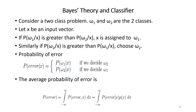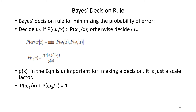The average probability of error can be obtained by integrating the joint probability of error and x with respect to x. The Bayes decision rule for minimizing the probability of error is: decide omega_1 if p(omega_1 | x) > p(omega_2 | x); otherwise decide omega_2. The probability of error on x equals the minimum of p(omega_1 | x) and p(omega_2 | x). The posterior probability p(omega_j | x) can be written in terms of the likelihood p(x | omega_j) and the prior probability p(omega_j), where p(x) is just a scaling factor. Also, p(omega_1 | x) + p(omega_2 | x) = 1.